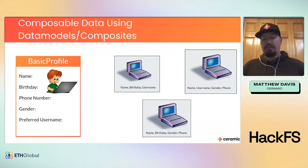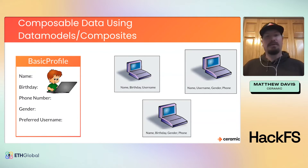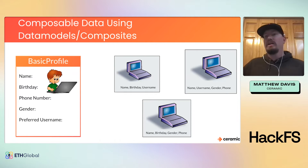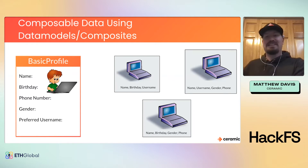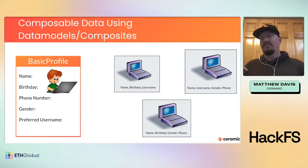So let's look at how Ceramic approaches this. Instead of asking you to fill in your name, birthday, and phone number ten different times, we give you the ability to create a data object. Right now we're calling them data models; in just a couple weeks we'll be calling them composites. Data models aren't going away — composites are just a little easier to use. Data models rely on JSON schemas and a REST API, while composites use a GraphQL query system, so you can plug in any GraphQL client to create and query data.